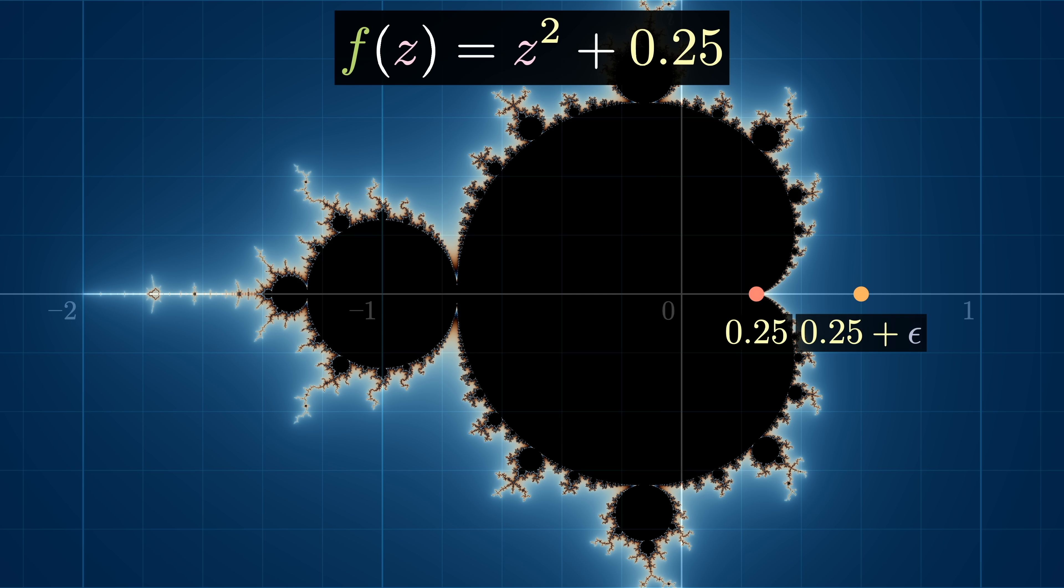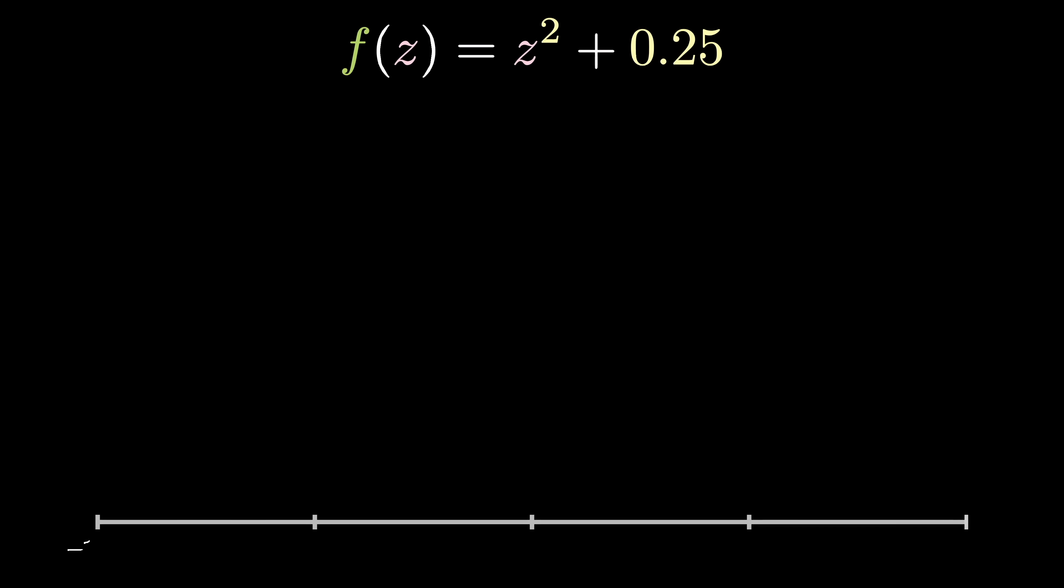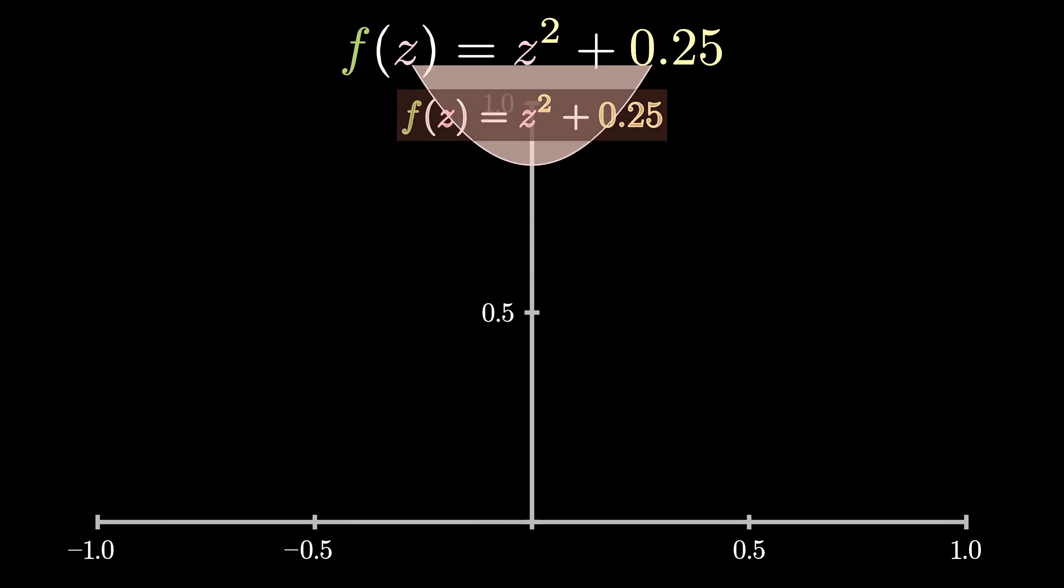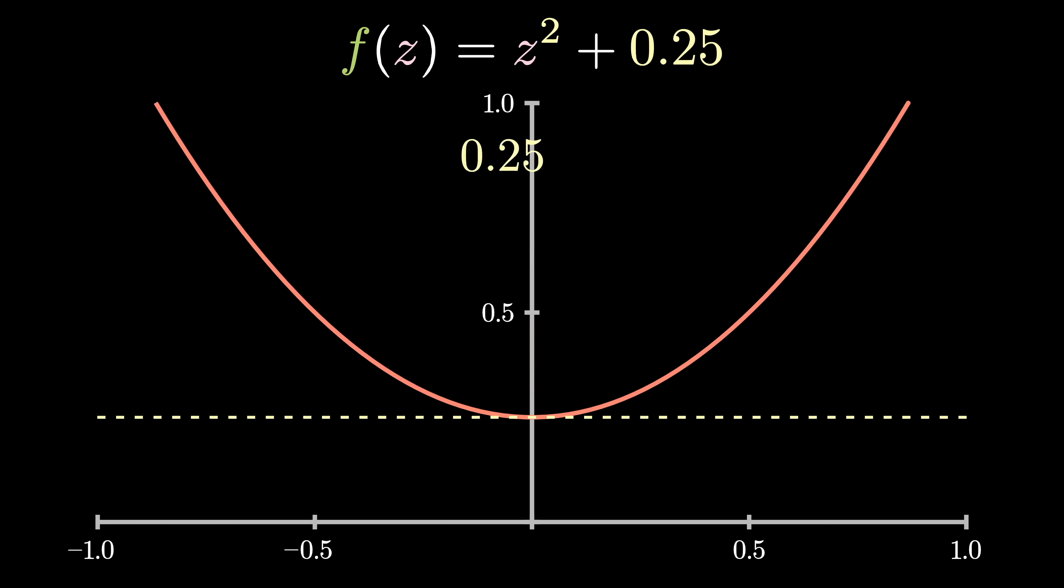The Mandelbrot update function at 0.25 is f(z) equals z squared plus 0.25. Since we only care about the real inputs and outputs, we can plot it as a parabola. Remember, we start with z equals 0, then calculate f(0), then plug that back into f and so on. But what does this look like on the coordinate plane?